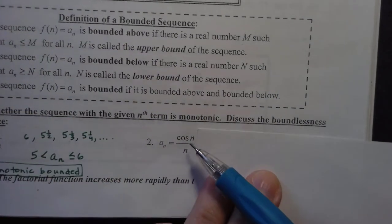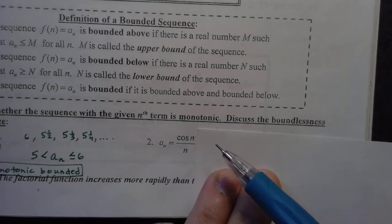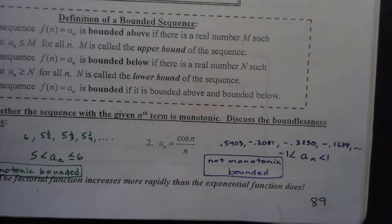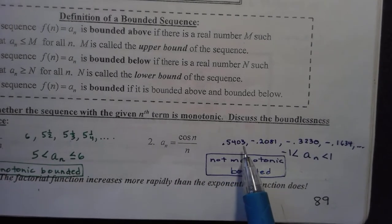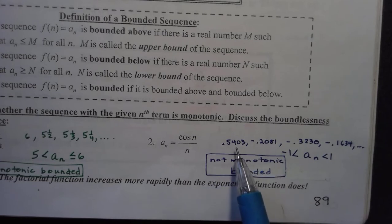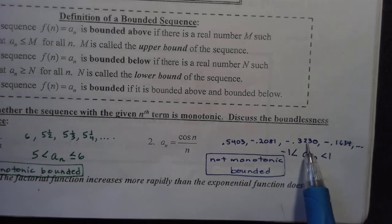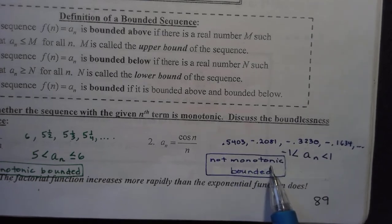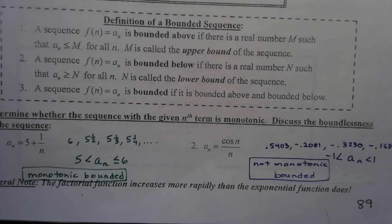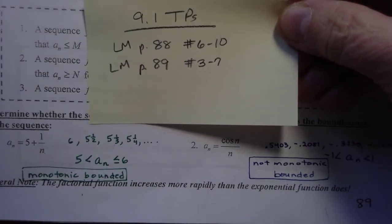What do we know about cosine? Cosine is always between negative 1 and 1 inclusive. Remember this is not n times pi — n is 1, n is 2, n is 3 — so we do this on the calculator to get an idea of what's going on. Make sure you are in radians. Notice that this is not monotonic: we have values like 0.5, then negative 0.2, negative 0.3, then negative 0.1, which is greater than the previous — so it is not monotonic, but it is bounded because the sequence is always between negative 1 and 1. General note: the factorial function increases more rapidly than the exponential function. Your TPs for this section are lecture manual page 88, numbers 6 through 10, and page 89, numbers 3 through 7.